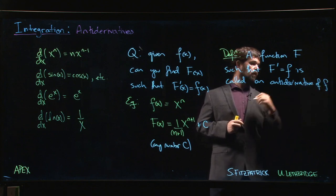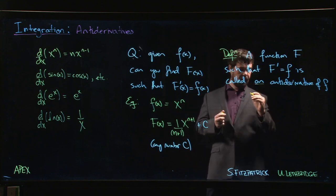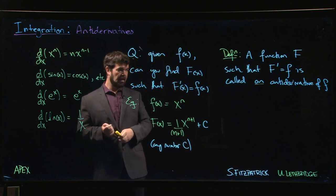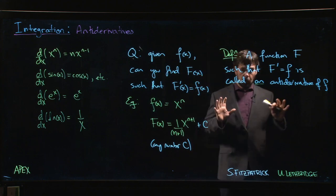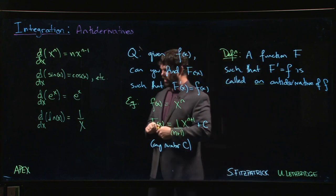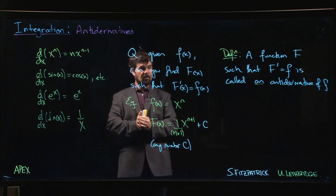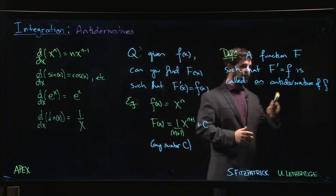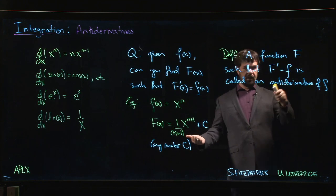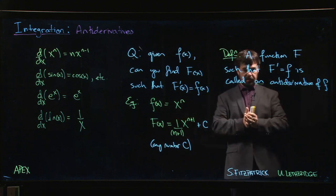We're using the indefinite article here—an antiderivative—because we could always add a constant and get a new antiderivative. One of the things that you might remember: back when we were talking about the mean value theorem, we used it to show that if two functions have the same derivative, then their difference is a constant. So that means if you have two antiderivatives for some function—if I had a capital F and let's say a capital G, and big F prime and big G prime were both equal to little f—there's two functions that have the same derivative.